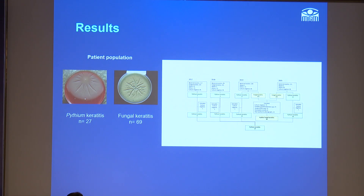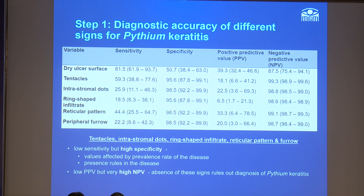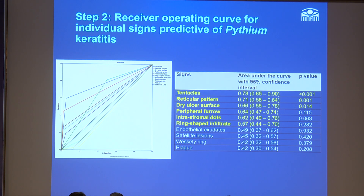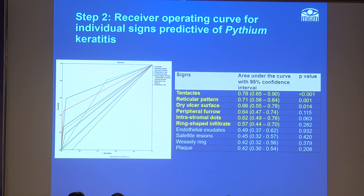We had 27 patients of pythium and 69 patients of fungal keratitis. Most signs like tentacles and intrastromal dots have low sensitivity but very high negative predictive value. Signs like tentacles, reticular pattern, and ring-shaped infiltrate had AUC values more than 0.5, giving them good discriminatory characteristics.